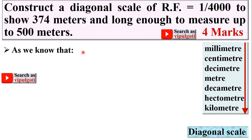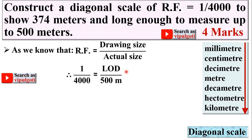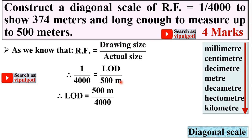As we know, representative fraction is equal to drawing size upon actual size, and here RF is given as 1 upon 4000. So: 1/4000 = LOD (length of drawing) / actual size, where actual size is 500 meters, because we want to measure a maximum size of 500 meters. Simplifying: LOD = (1/4000) × 500 meters = 0.125 meters.